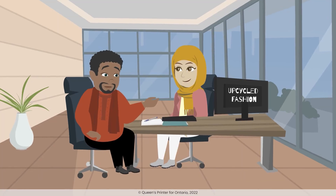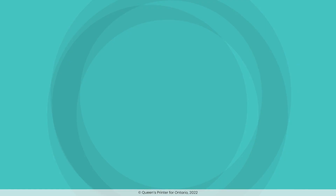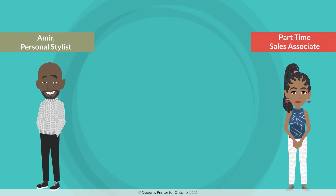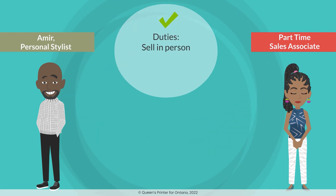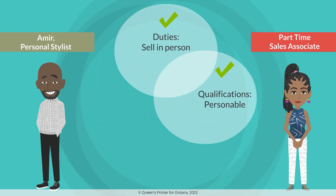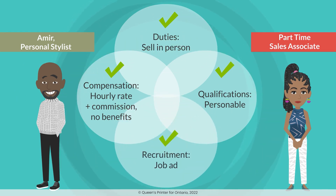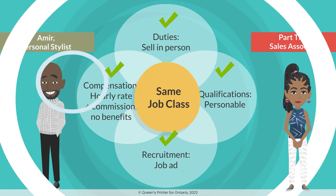Do we have any positions that can be grouped together as one job class? Amir, our personal stylist, could be in the same group as our part-time sales associates because they both sell directly and in person to our customers, and the most important qualification for both positions is that they are personable when working with customers and make each customer feel great when they leave the shop. And they're both paid an hourly rate plus a sales commission but no benefits. I also remember we hired them all by posting a job ad at the fashion design school. That means those two jobs meet all four criteria. Yes, so we can group these two positions into a single class.